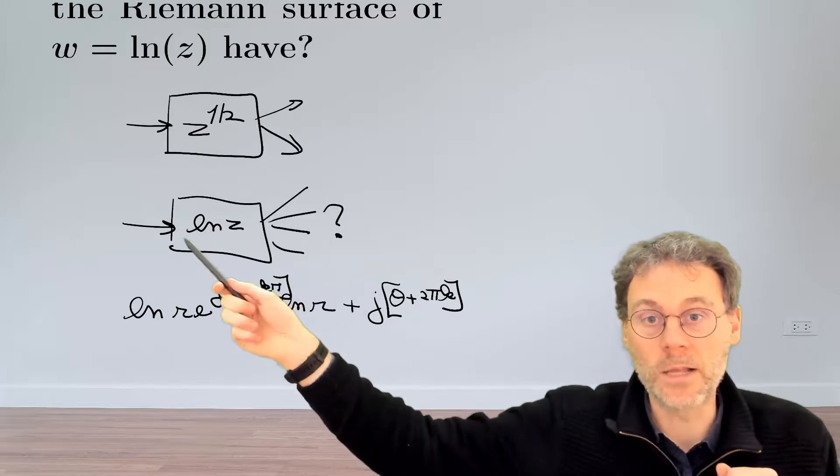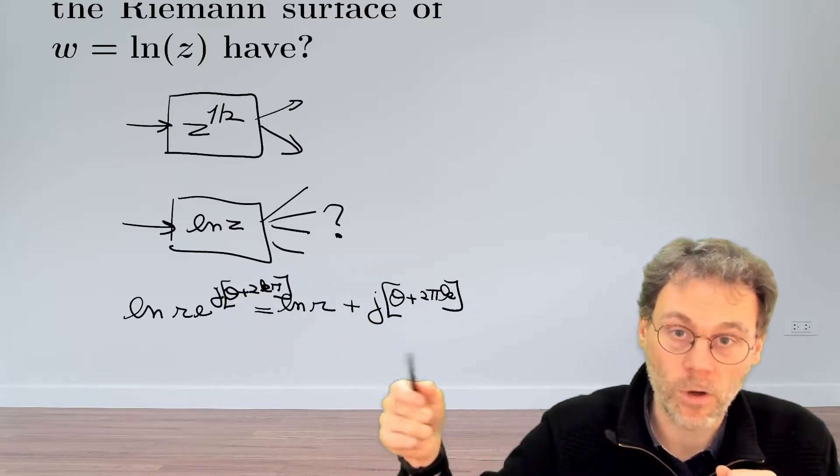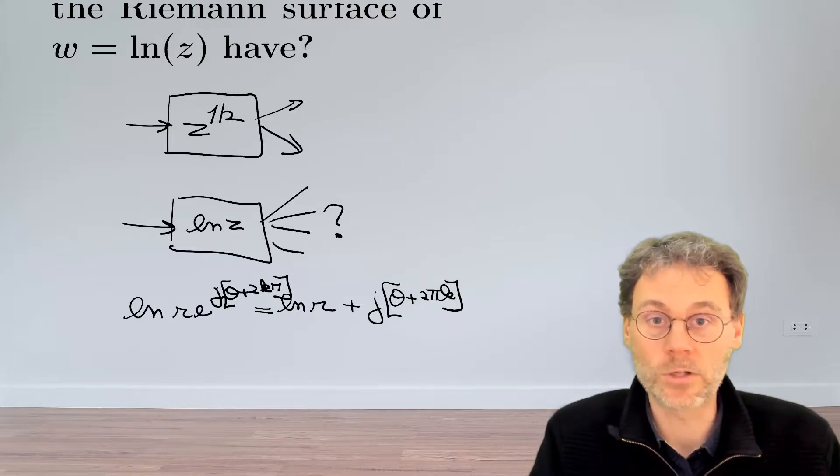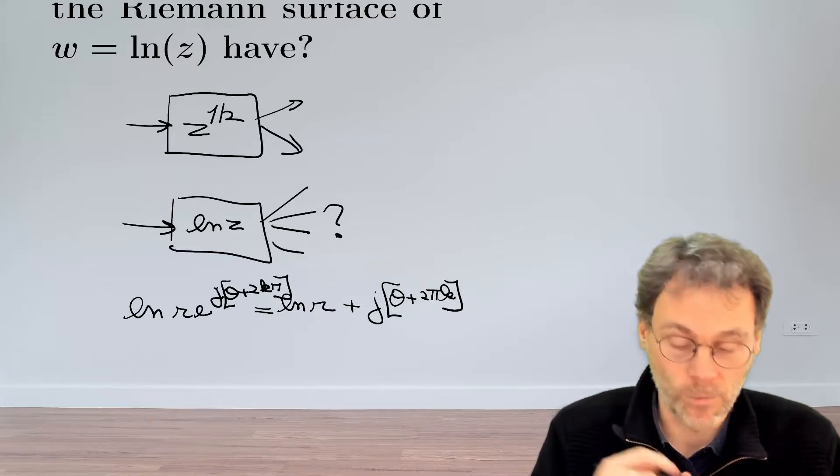Basically, single input, you get an infinite number of results for your complex logarithm. So this means that the Riemann surface will have an infinite number of sheets.